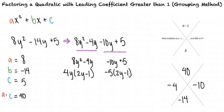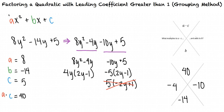How do you know that negative 10y and 5 have a common factor of negative 5 instead of positive 5? We must make sure that these two quantities in parentheses are the same. If we had pulled out a positive 5, we would have 5 times negative 2y plus 1, and this quantity, negative 2y plus 1, is not the same as the quantity 2y minus 1. We must pull out factors with signs that make the quantities match.